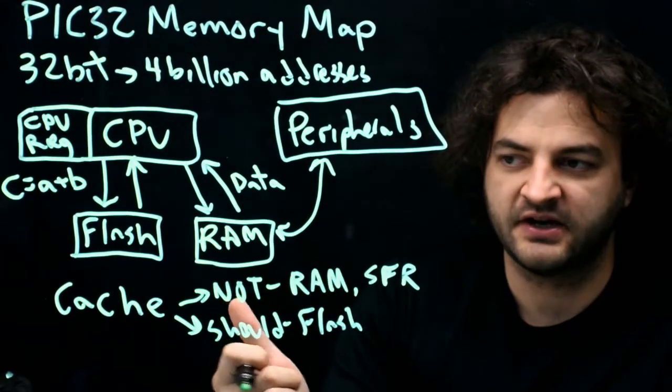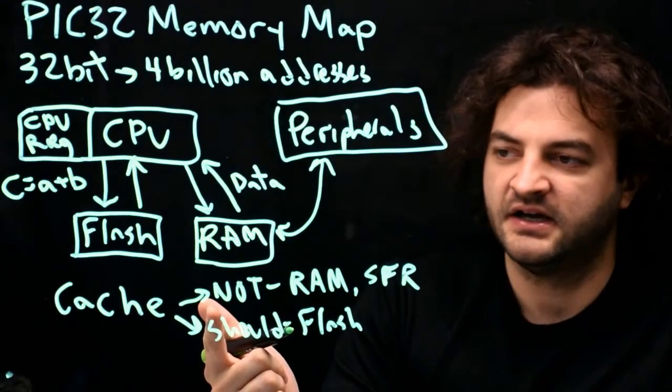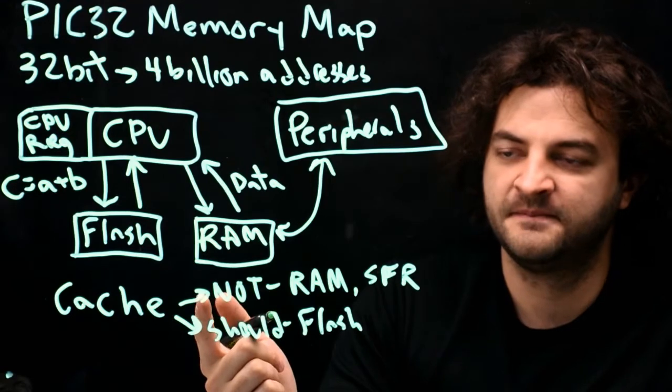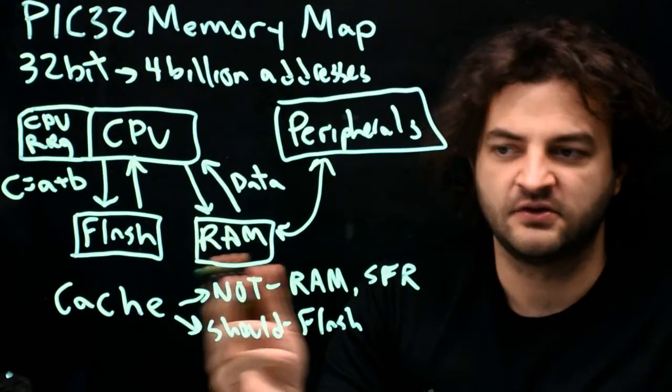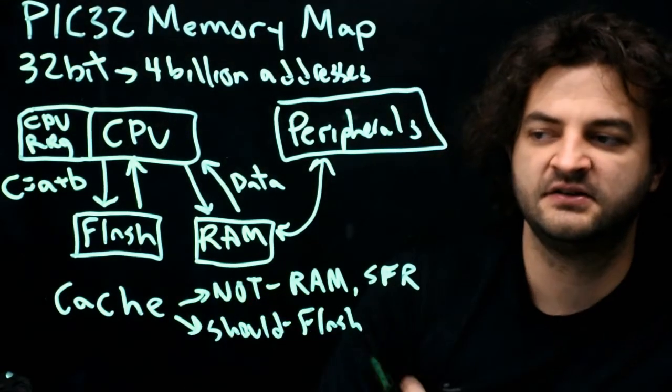So that's how you should think about what should be cached and what shouldn't be cached. If it's changing in the background, if it's fast to access, don't cache it. If it's slow to access, you should probably try to cache it.